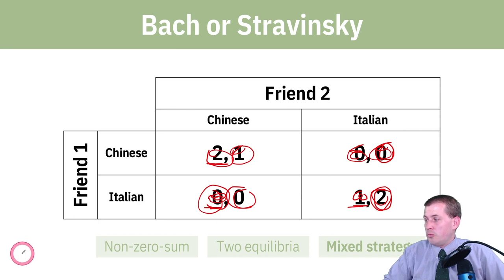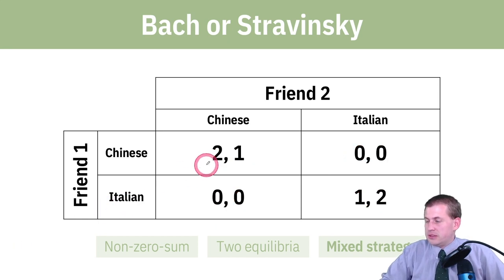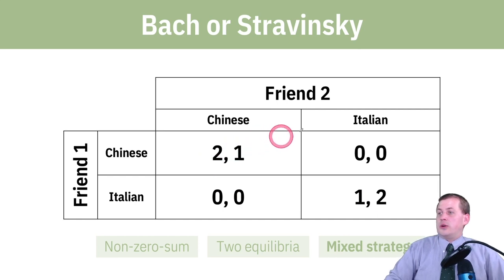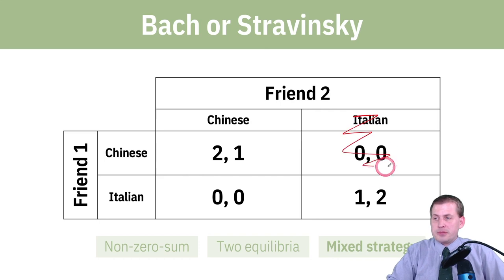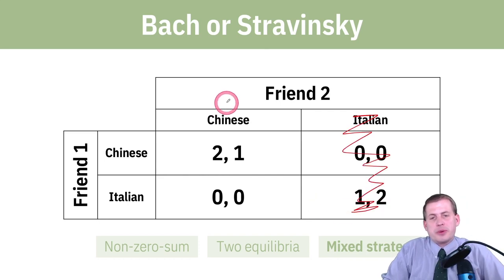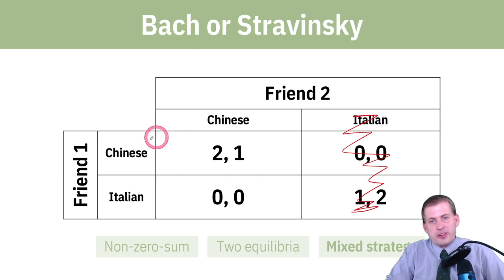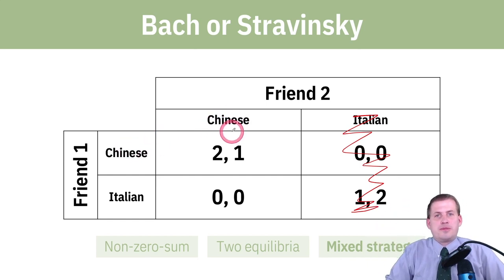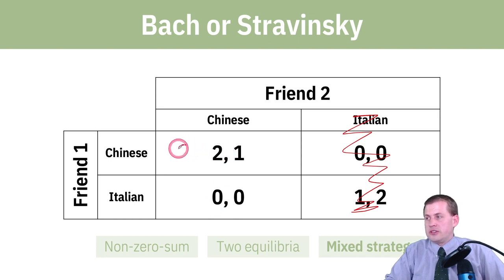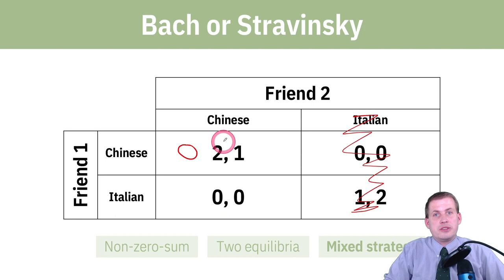Let's go through the same solving process that we did with Anil and Bala. We're going to cover up the Italian column and go with friend one first. If you're friend one, you ask: assume friend two is going to the Chinese restaurant — where should I go? You look at your payoffs: you can either get two utils or zero utils, so you should go to Chinese if you think friend two is going to Chinese.